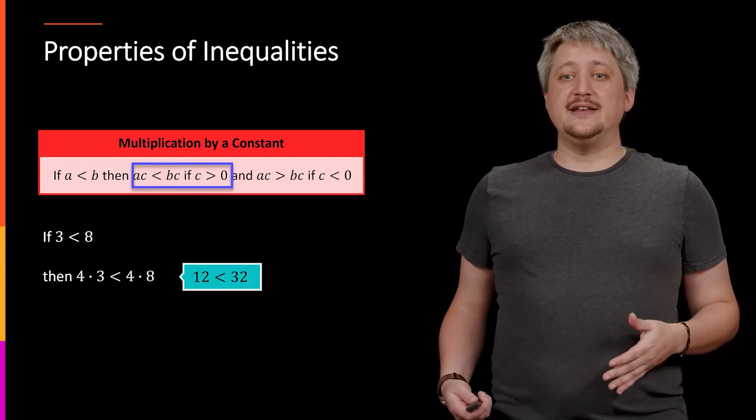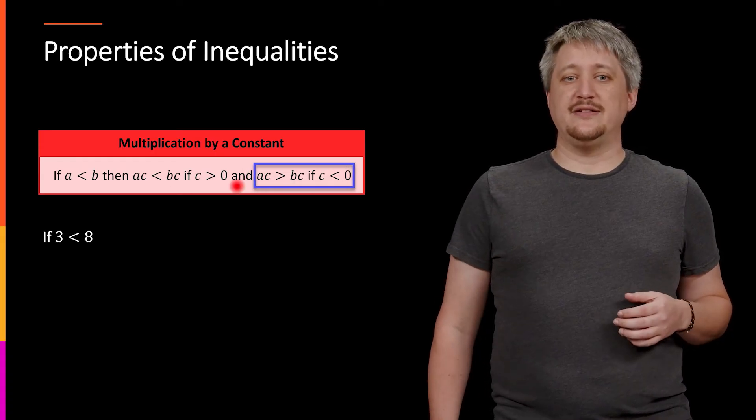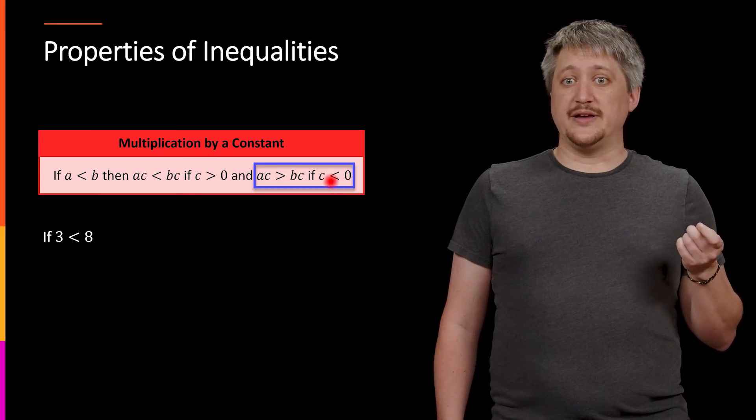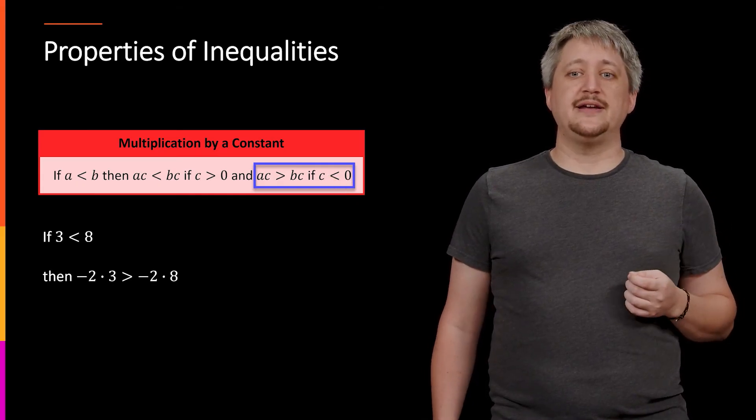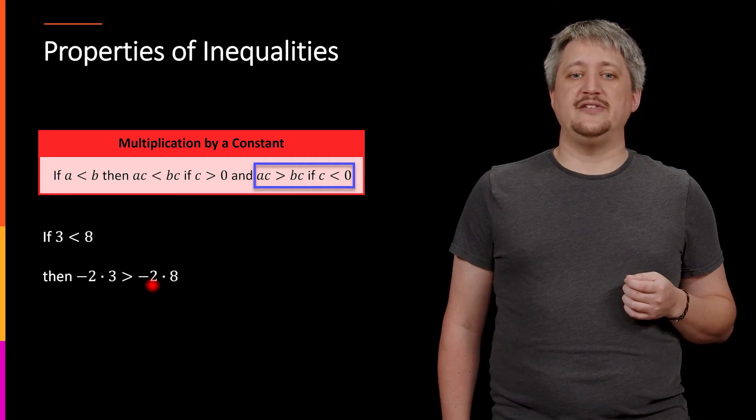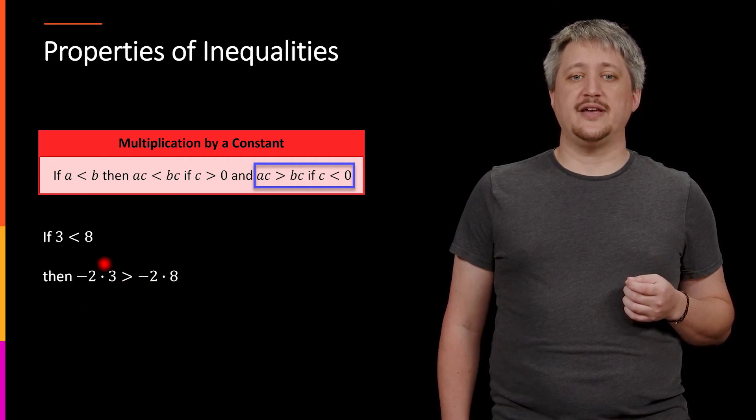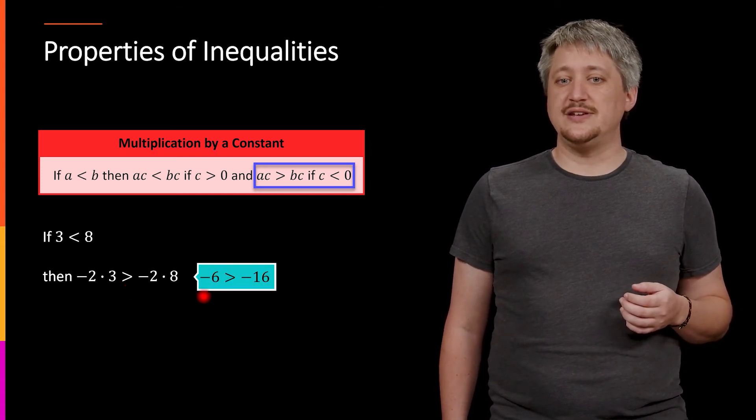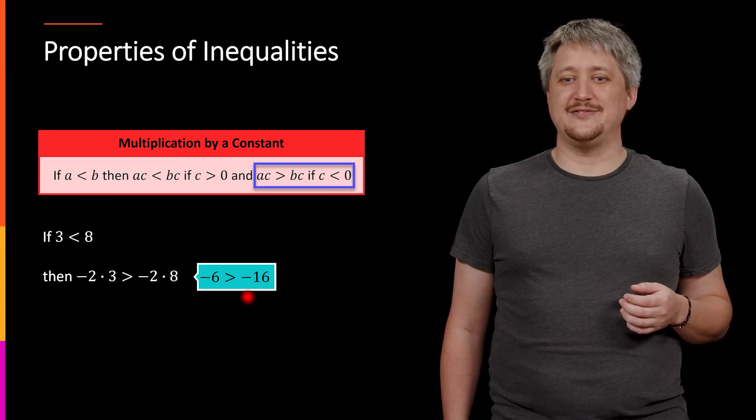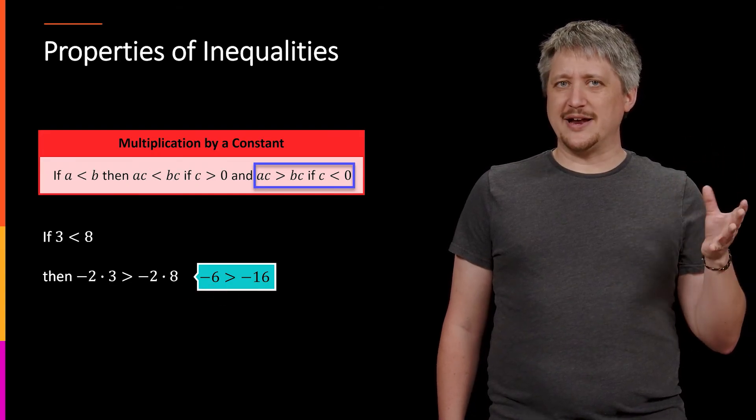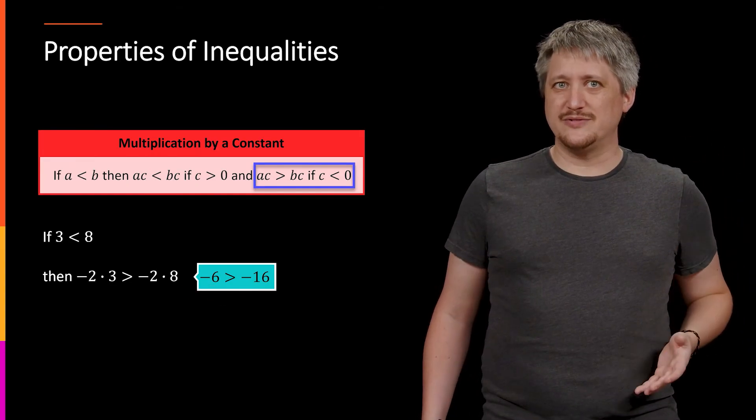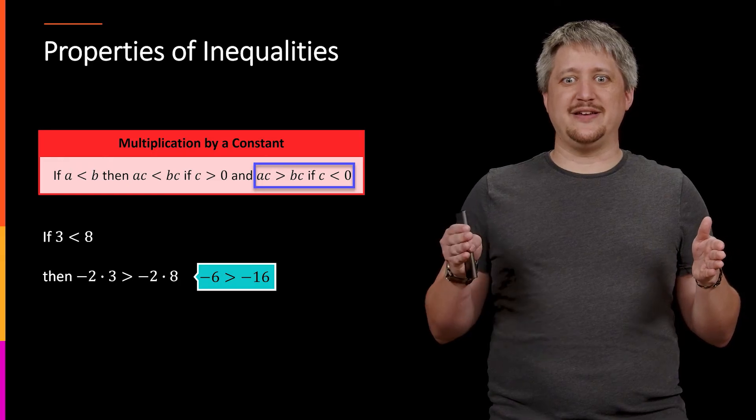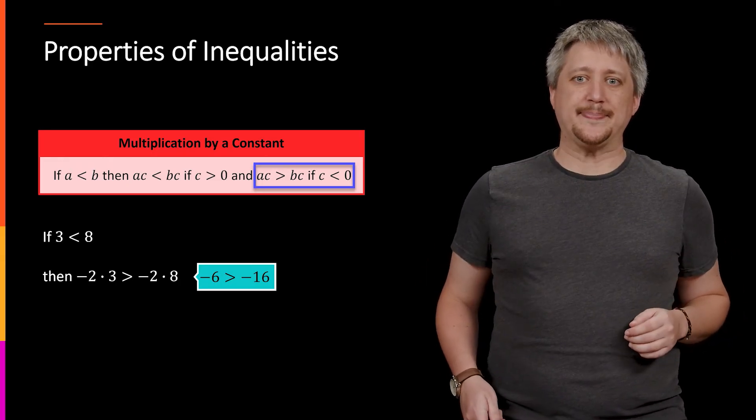Likewise, if I want to use a negative value. If I want to take that same a less than b, so three less than eight, but I want to use some negative number and multiply it. Well, multiplying by a negative, say a negative two on the left and the right, means that I have to flip this sign. So I go from less than to greater than. Indeed, if I do this out, I'm going to get negative six, which is indeed bigger than negative 16. But again, when I say bigger, I don't mean magnitude. I mean to the right of. So if you look at a number line, then you're going to have negative six is further right than negative 16.